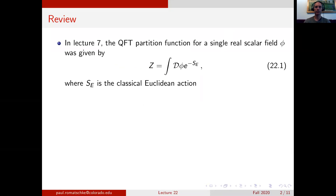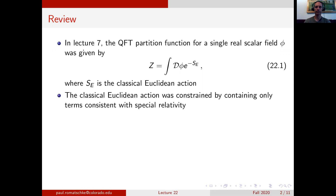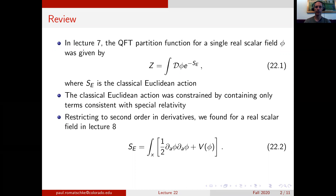Recall that in lecture 7 we set up the QFT partition function for a single real scalar field phi. It was given as Z, the path integral over the field phi times the exponential of minus the Euclidean classical action. The classical action itself was constrained by identifying symmetries that we wanted for the field theory, such as having only terms consistent with special relativity. Restricting to second order in derivatives, we found that for a real scalar field we could write down a Euclidean action consisting of a kinetic term, the two-derivative term, and a potential term V of phi.